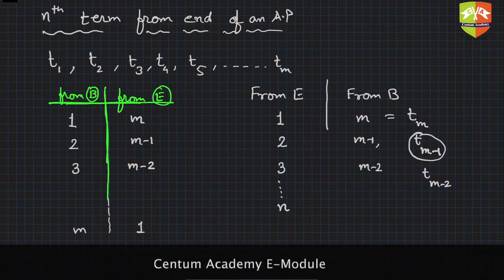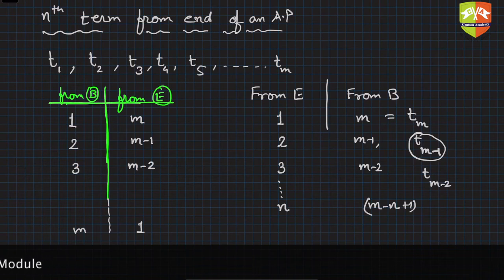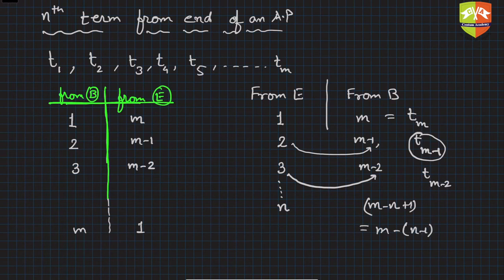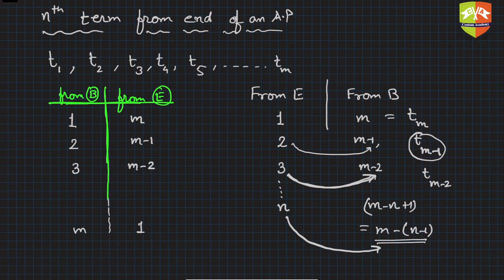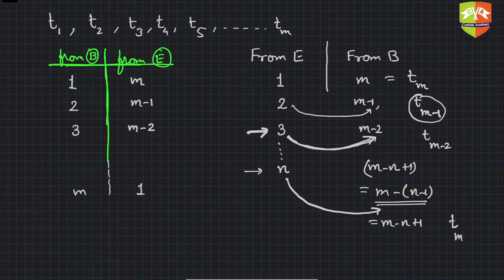So from end, the nth term — observing the pattern: second term from end corresponds to index m minus 1, third term from end corresponds to index m minus 2. So n corresponds to index m minus (n minus 1), which simplifies to m minus n plus 1. Hence the nth term from end is the (m minus n plus 1)th term from the beginning.